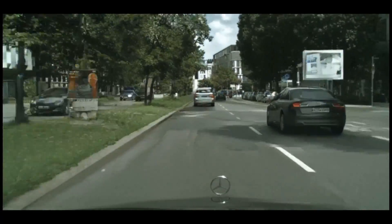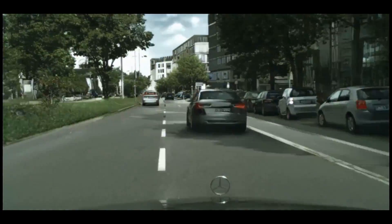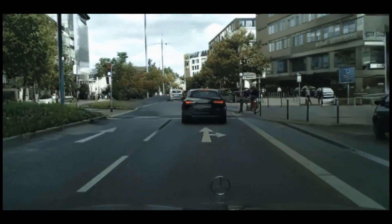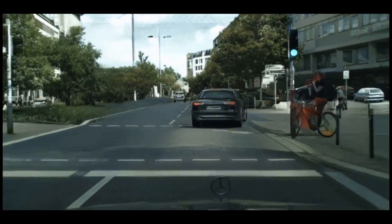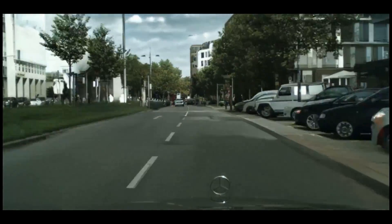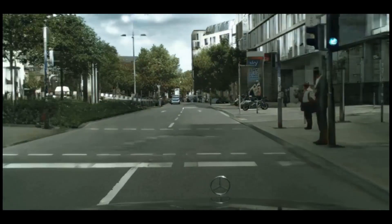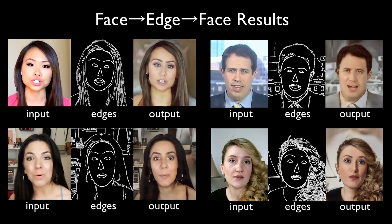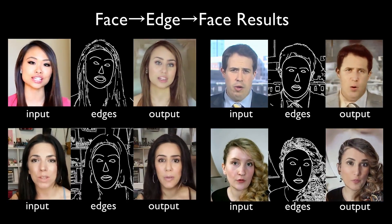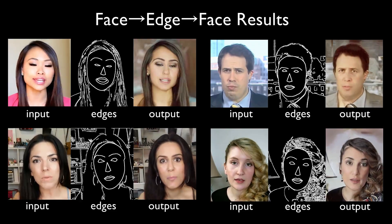This technique allows us to edit or create content in a convenient input domain, and then generate a video in an output domain that would be much harder to edit or create. In addition to synthesizing street scenes, we show our network synthesizing videos for other domains.